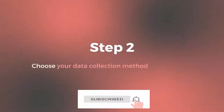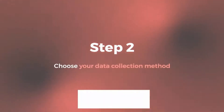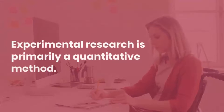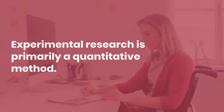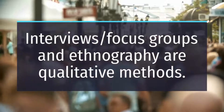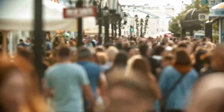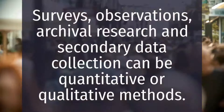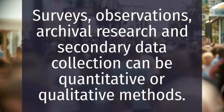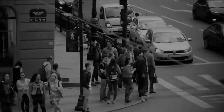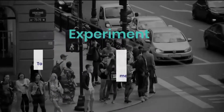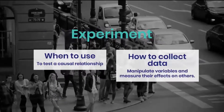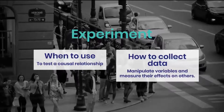Step 2: Choose your data collection method. Based on the data you want to collect, decide which method is best suited for your research. Experimental research is primarily a quantitative method. Interviews, focus groups and ethnography are qualitative methods. Surveys, observations, archival research and secondary data collection can be quantitative or qualitative methods. Carefully consider what method you will use to gather data that helps you directly answer your research questions.